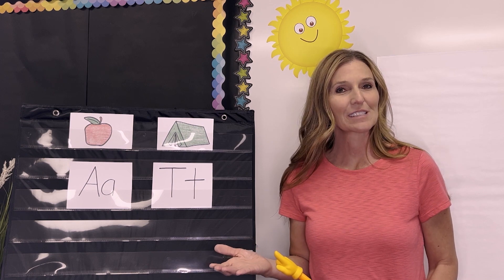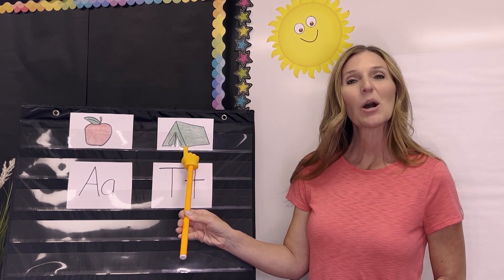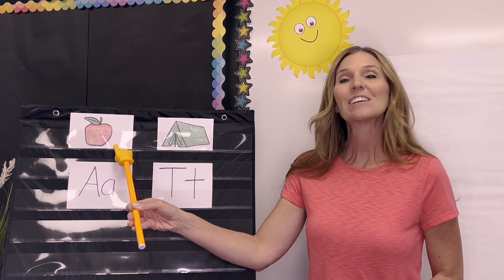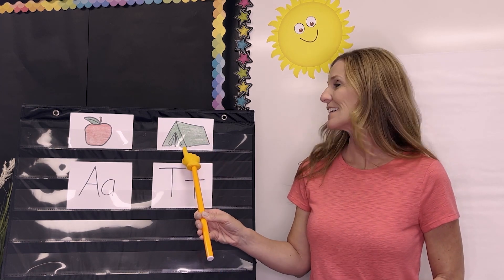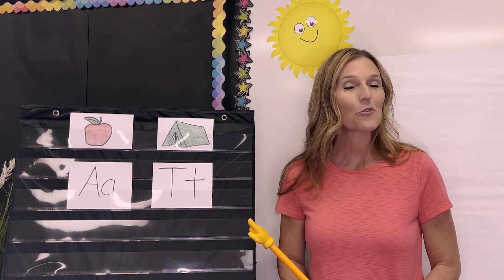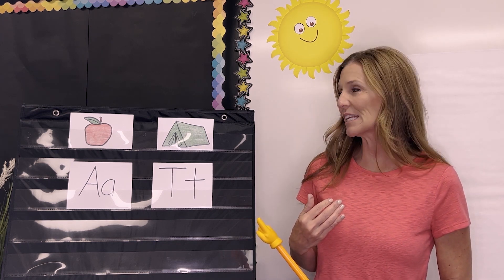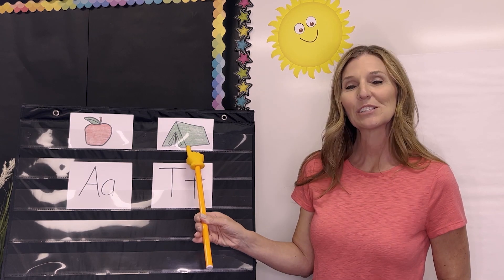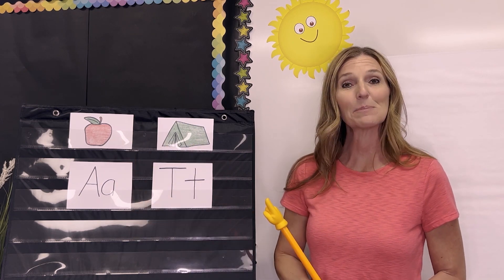Now we're going to think about sounds. Here is a picture of an apple and a tent. Point to the picture of the apple. The word apple starts with A. Point to the picture of the tent. Tent starts with the sound T. Let's listen for beginning sounds and match the word that I say with the same beginning sound as either apple or tent. I'll say the word — you point or say which has the same beginning sound.